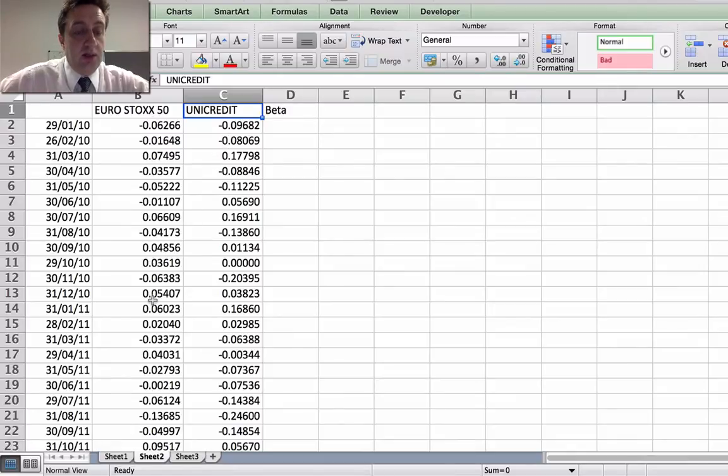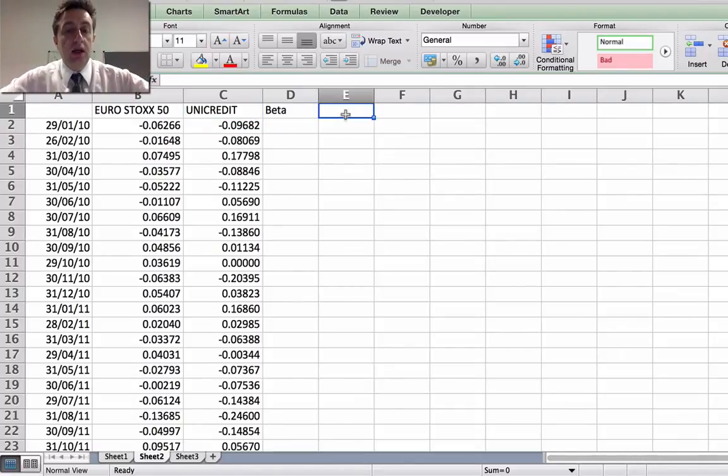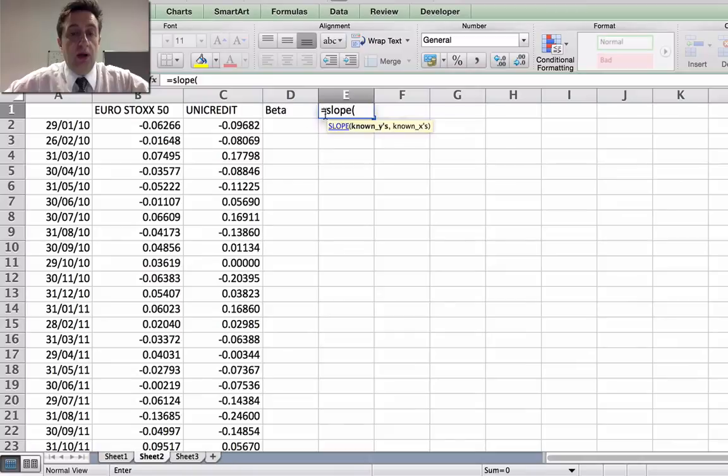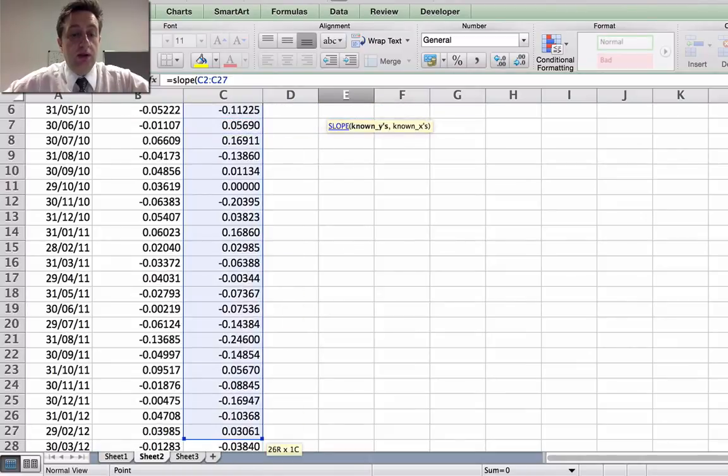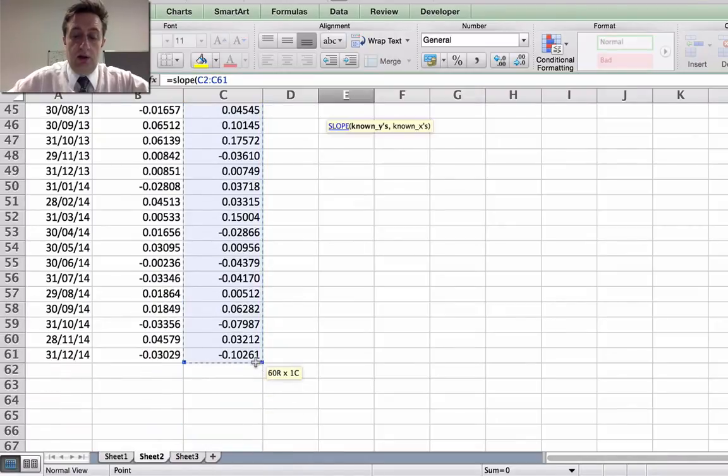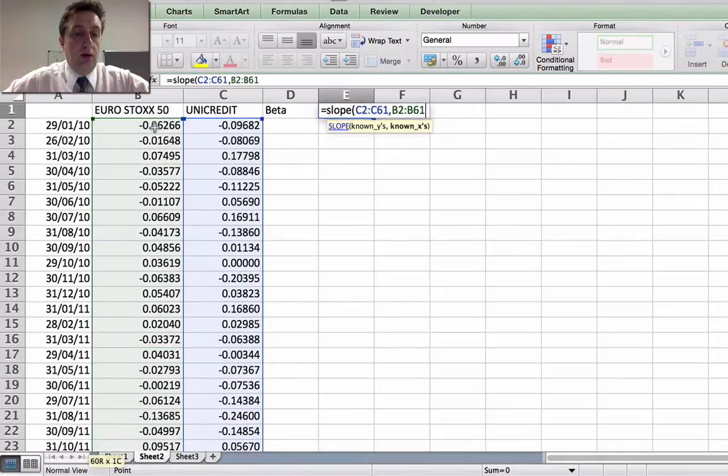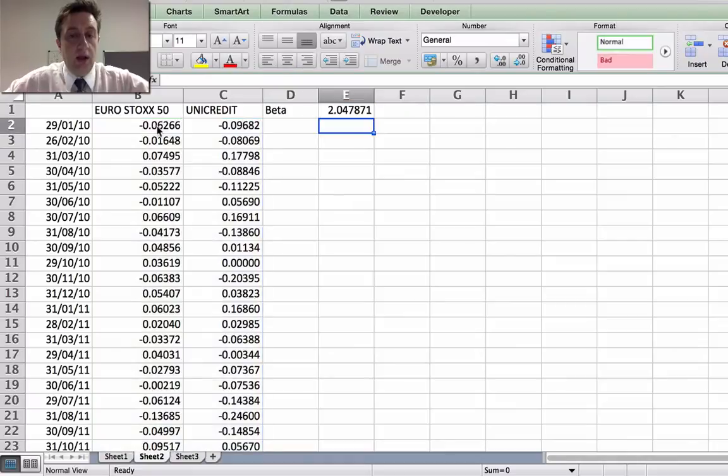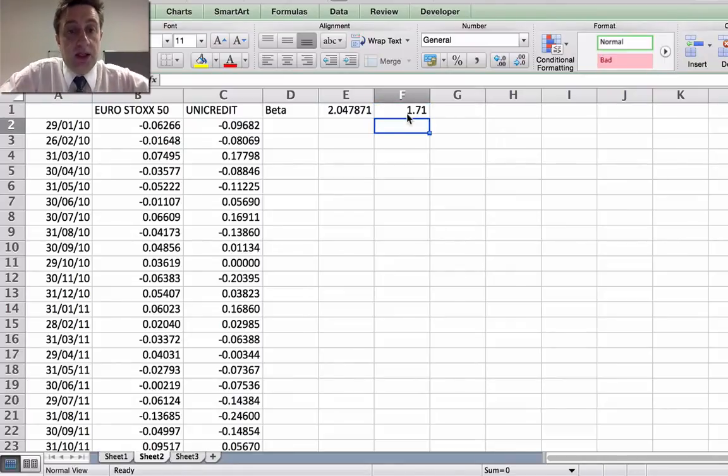And that's the market index. And that's the overall returns for Unicredit. So we want to calculate the beta, and we'd use the function slope, slope of the known y's. So the known y's are the Unicredit, and the known x's are the Eurostoxx index. So we're given a beta here of 2.04.